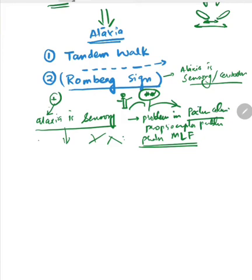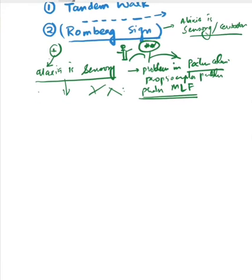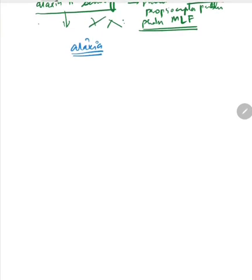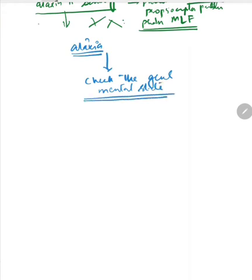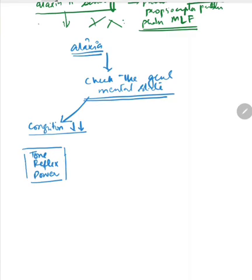Now you have confirmed that the patient has ataxia. What will be your approach? First thing you need to see is: check the general mental state. Is the patient oriented, well-looking, alert, or not? If the patient has ataxia and cognition seems to be decreased, then check his tone, reflexes, and power.